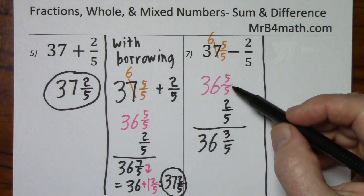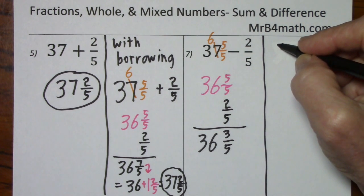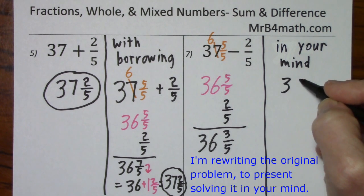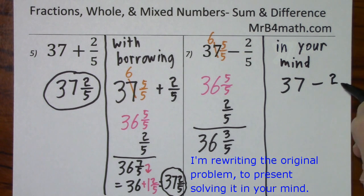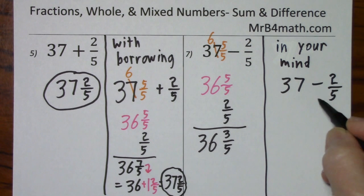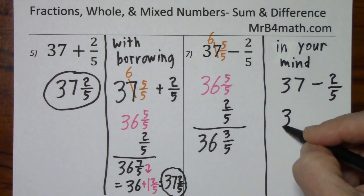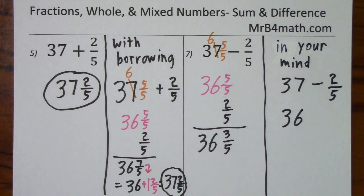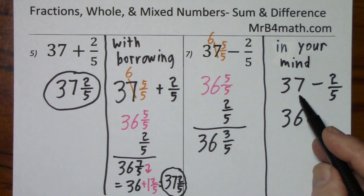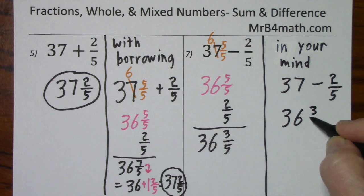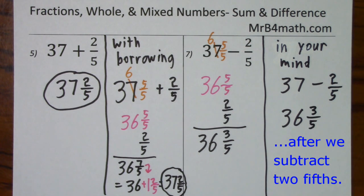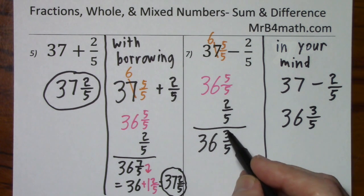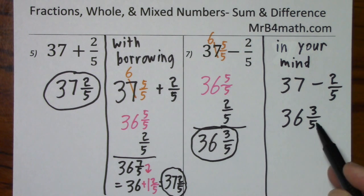Oftentimes, instead of having to write a common denominator to show all this, you might be able to do this in your mind. So, if you have 37, you want to take away 2 fifths. It's going to be a little bit less than 1, right? So, that's 36. And if you look at 2 fifths, if you had 3 more up here, you would have 5 fifths. So, 3 is what's missing from this to make it a 1. So, 37 becomes 36 and 3 fifths. Forgot to circle my answer. You can see it's the same as over here.